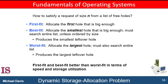The best fit strategy produces the smallest leftover block. The worst fit strategy allocates the largest block available; again, we have to search the entire list unless it's sorted by size. This strategy produces the largest leftover block, which may be more useful than the smaller leftover block from the best fit approach. Simulations have shown that both first fit and best fit are better than worst fit in terms of decreasing time and storage utilization. Neither first fit nor best fit is clearly better than the other in terms of storage utilization, but first fit is generally faster.